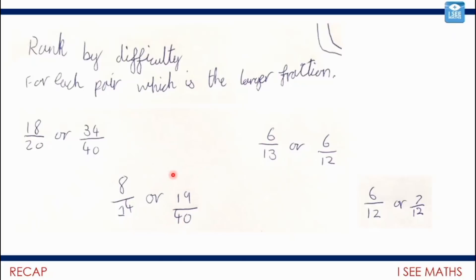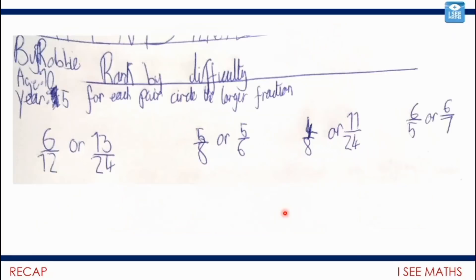Nineteen-fortieths is less than half. Eight over fourteen is more than half because seven-seventeenths is half of fourteen and eight is more than that. It's quite difficult to find a common denominator there. But for this pair, it's easy: eighteen-twentieths is thirty-six out of forty, so eighteen-twentieths is actually more.